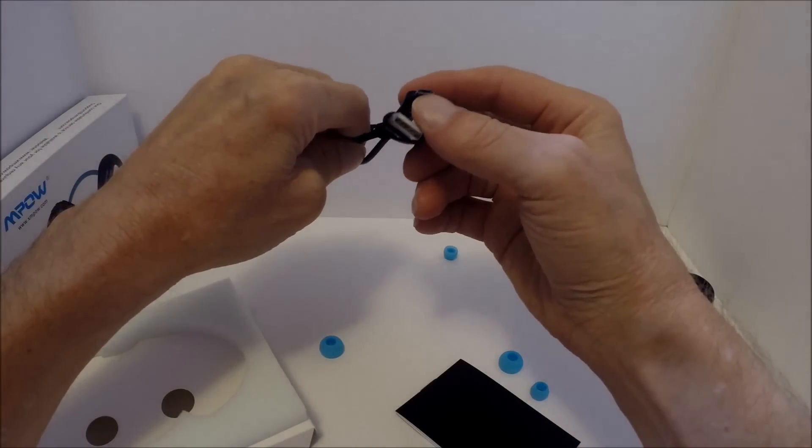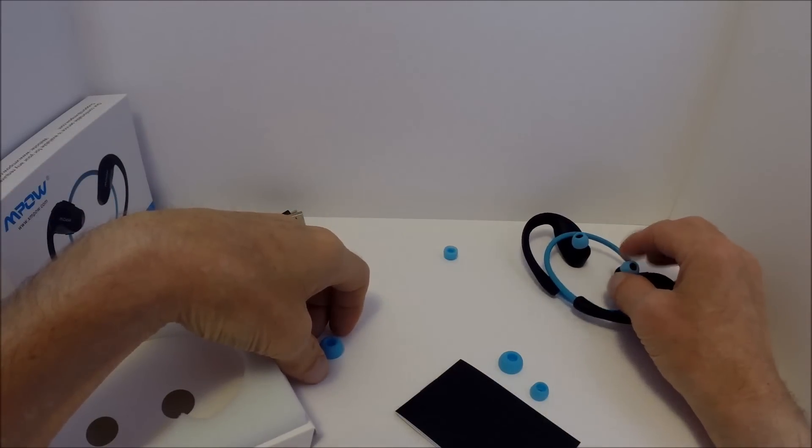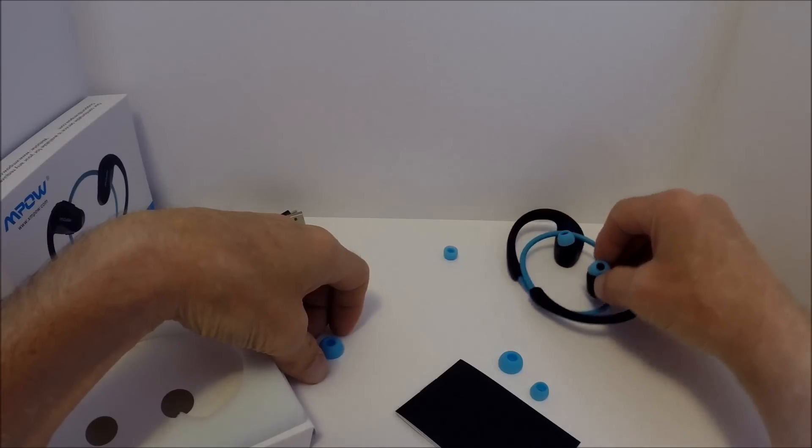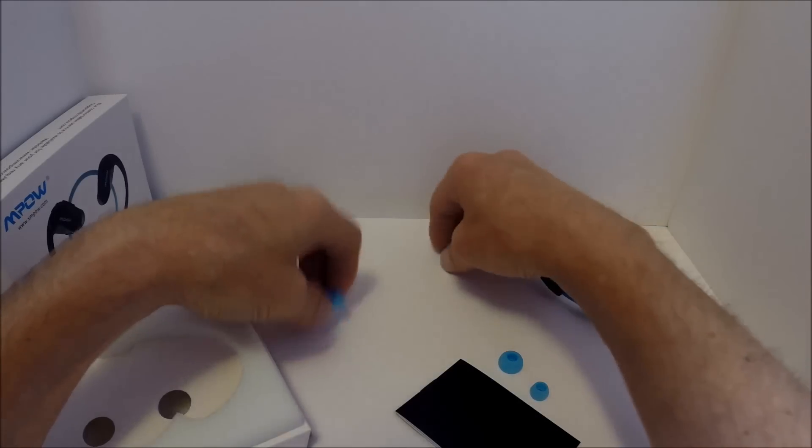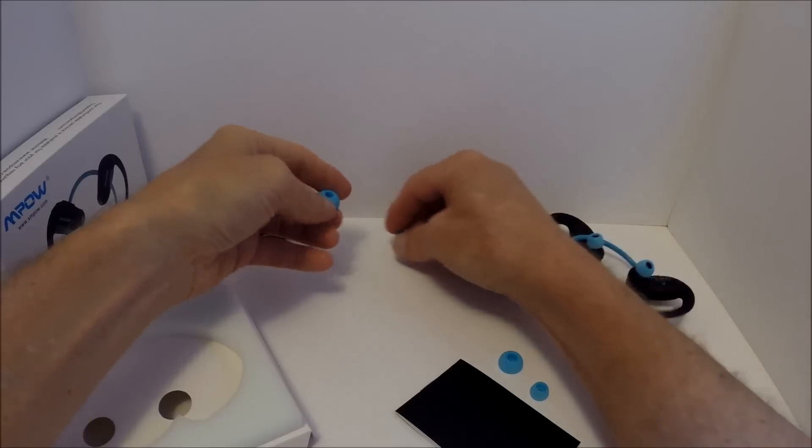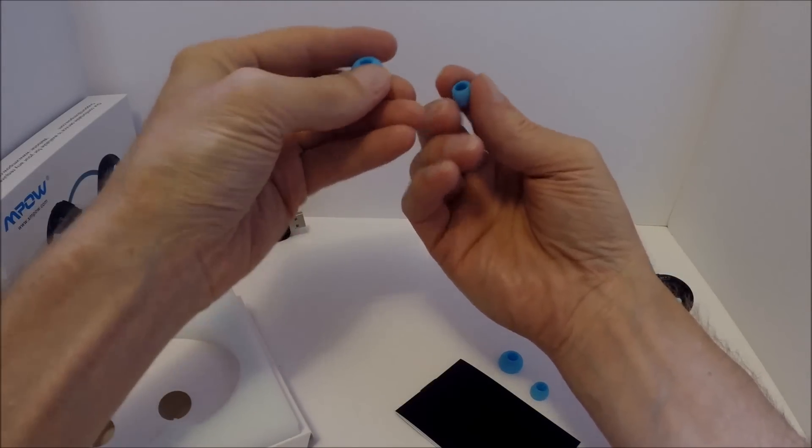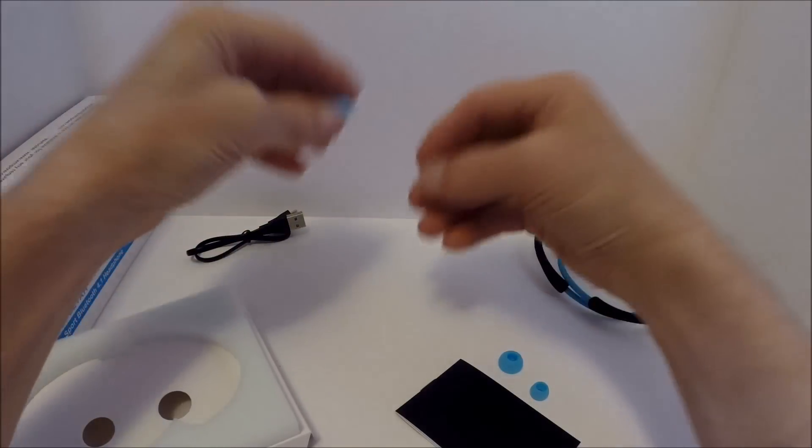You have the medium-sized earbud portion already installed when you get it. The little rubbery or silicone pieces are very soft. Then you have smaller and larger sizes. Here's one of the large ones. You have a large and a small set.